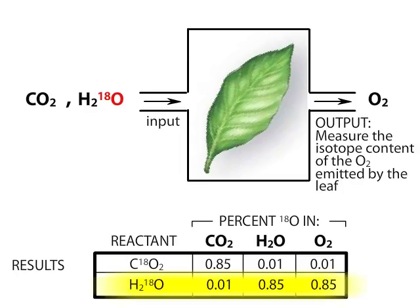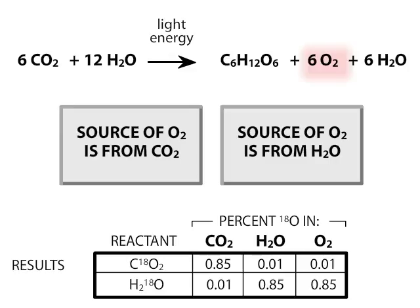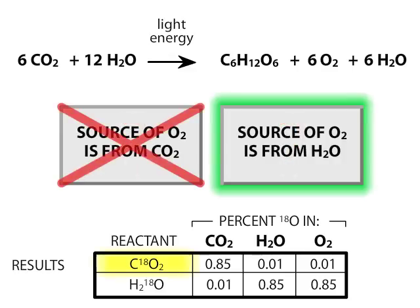What can we conclude from this experiment? Is the source of oxygen released by the plants derived from the carbon dioxide or water reactants? When CO₂ was labeled with O-18, none of the oxygen released was labeled. However, when O-18 labeled water was used as a reactant, the oxygen released was labeled with a heavy isotope. Therefore, the source of the oxygen in the O₂ released by the plant is water.